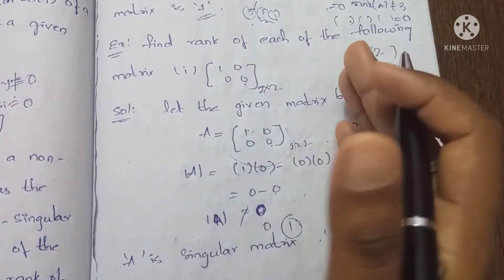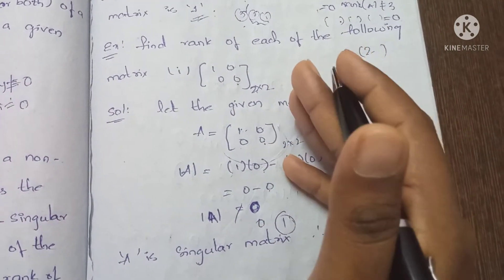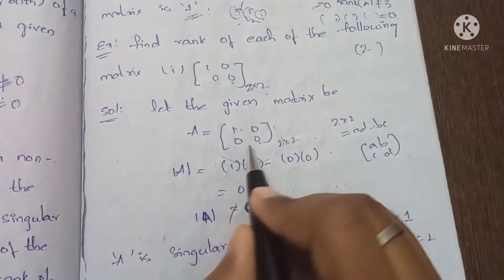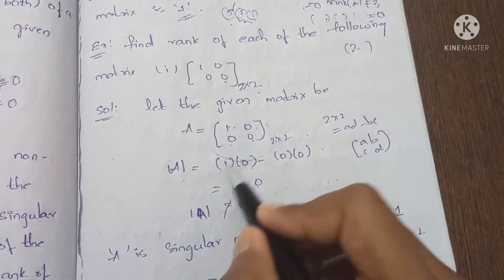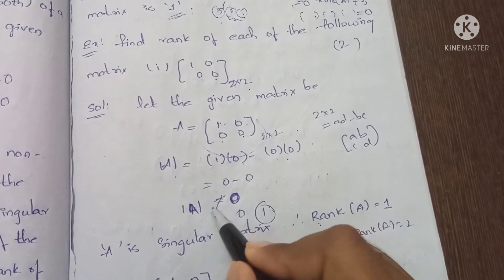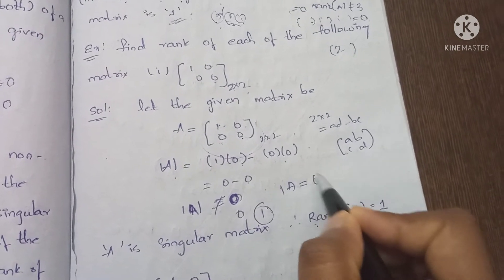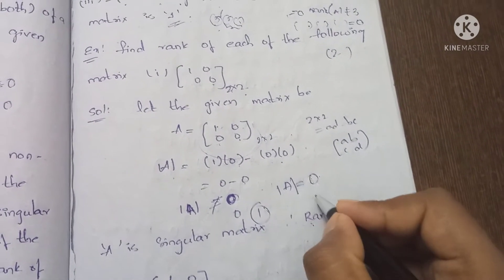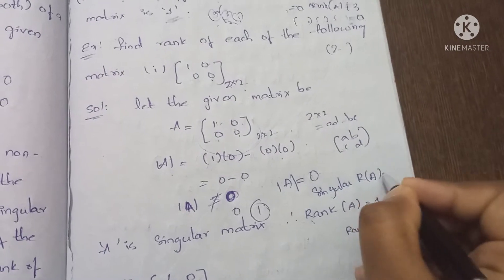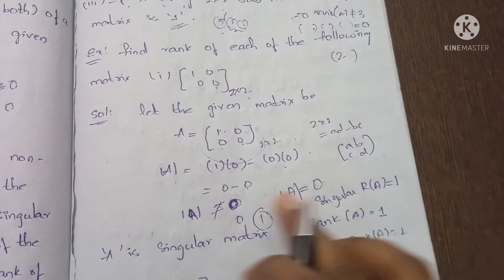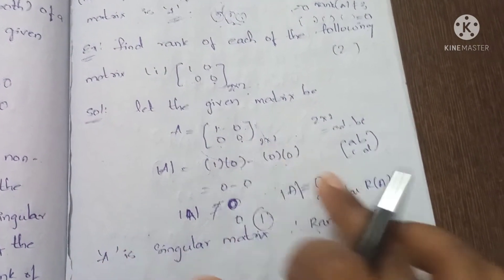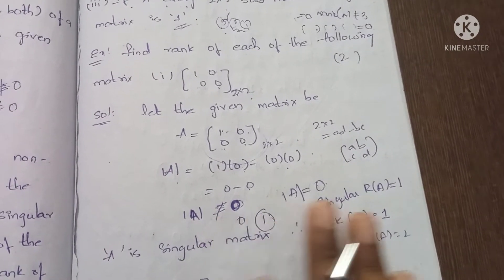First problem: find the rank of the matrix [1, 0; 0, 0]. This is a 2x2 matrix. We find the determinant: AD minus BC equals 1 into 0 minus 0 into 0 equals 0. Since the determinant equals 0, the matrix is singular. So rank is not 2. We check 1x1 sub-matrices; the element 1 is not zero, so rank of A equals 1.